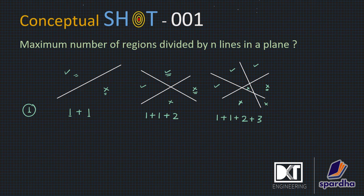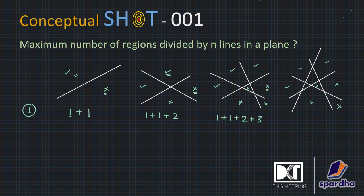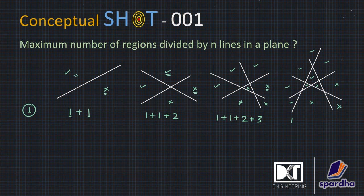So now you can guess what the fourth line will do — the fourth line is creating four more regions. You can see from here it has created four more regions: this is one, this is another, this is another, this is another. So the total number of regions we have now is 11.